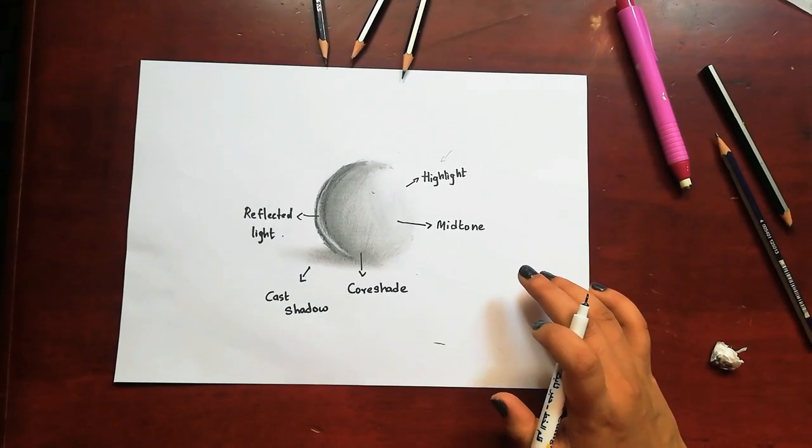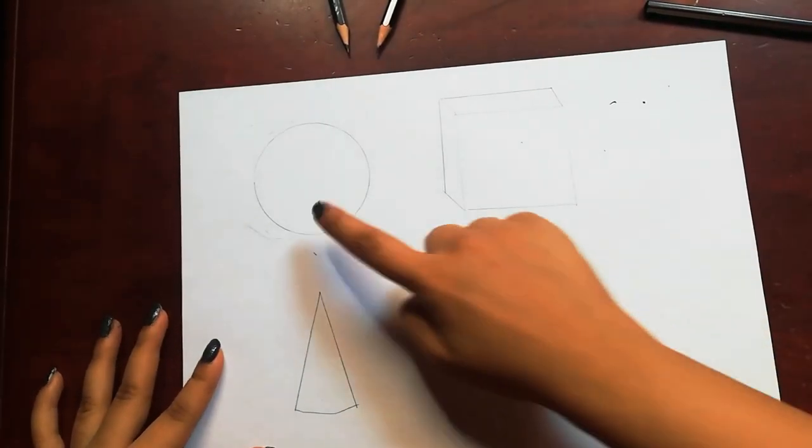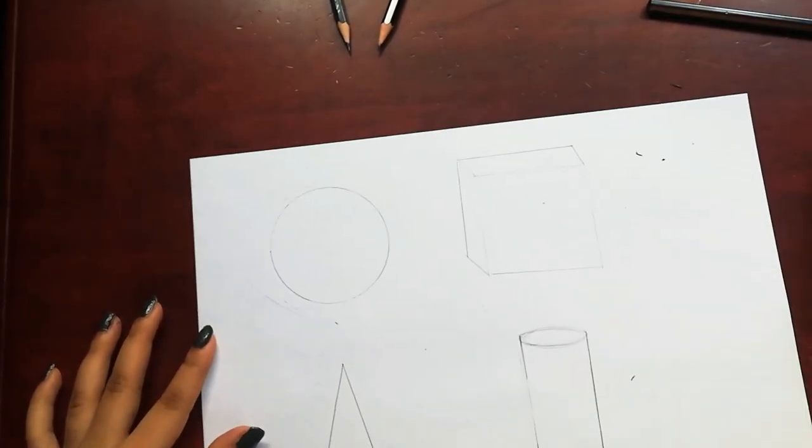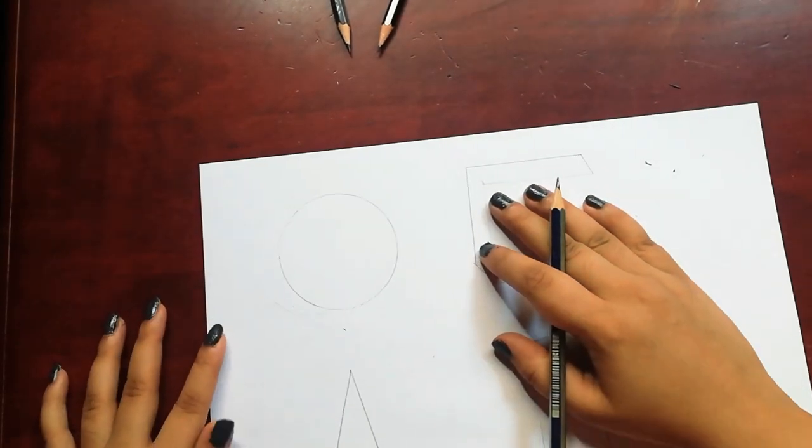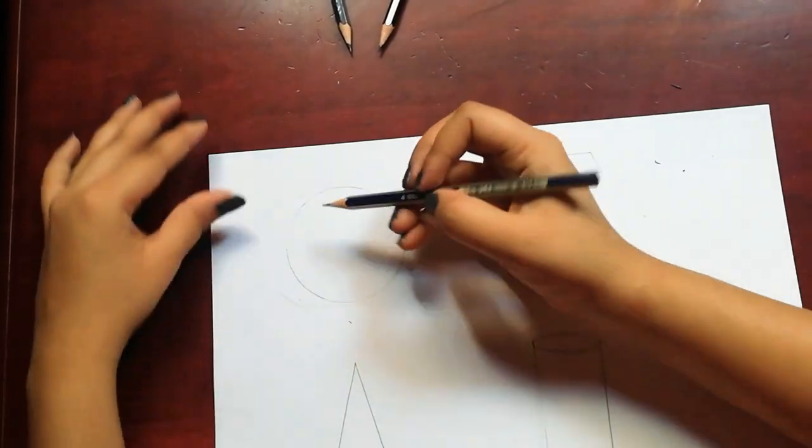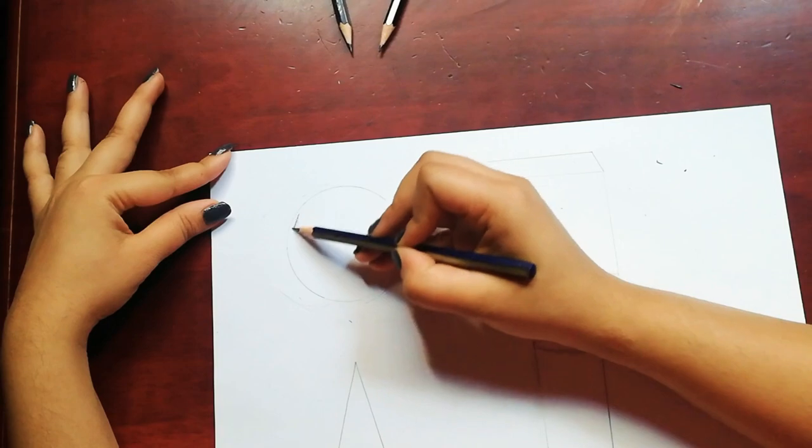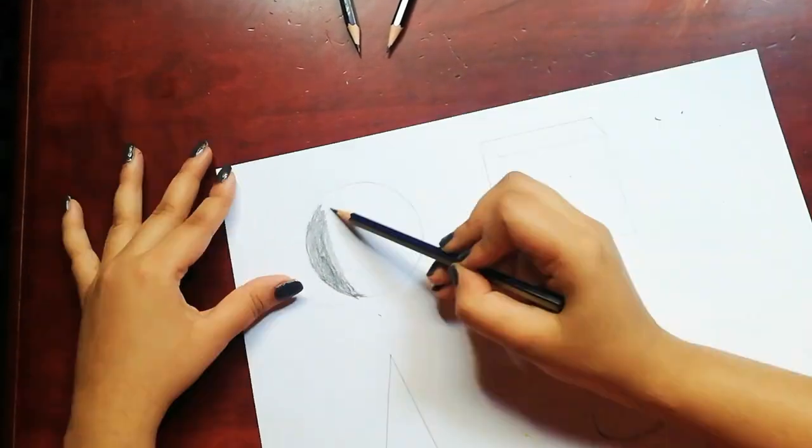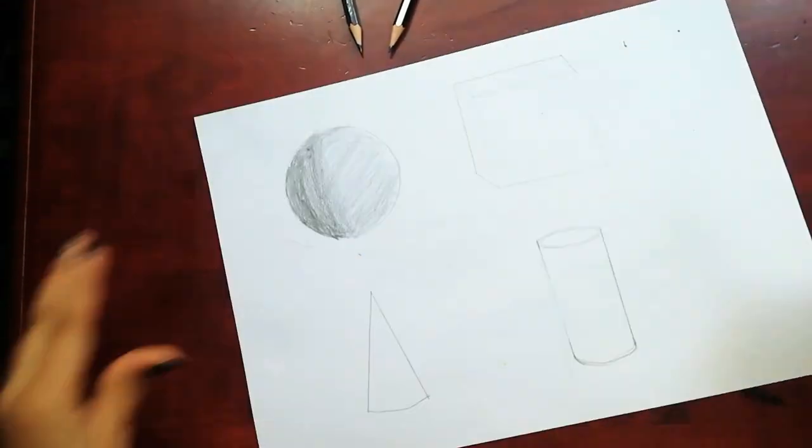Here I have four different shapes and I will show you how adding value to four different shapes differs from each other. I'm going to start with the core shade of the object, then go to the midtone, and then blend both of them.